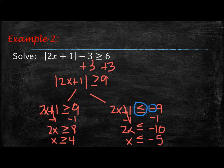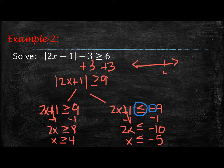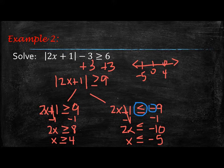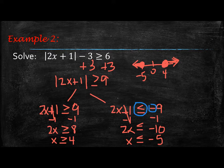To determine whether you have an AND or an OR statement, it helps to draw a number line. We're going to have 4 over here and negative 5 over here, with 0 in the middle. At 4, it's everything greater than or equal to — equal to gives a solid point and greater than goes to the right. For x less than or equal to negative 5, equal to gives a solid point and less than shoots to the left.